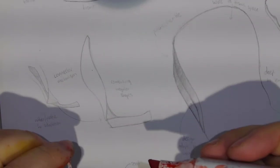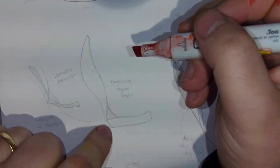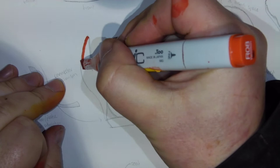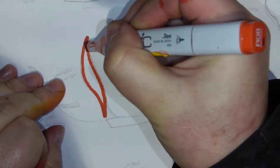So let's jump into the Copic marker. I'm going to quickly place in tone, a flat tone across all of the parts that I want to be orange. So I'm just going to lay this down very quickly, making sure that I'm doing this very quickly.